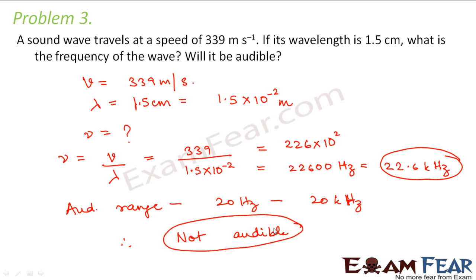I hope that now you understand what is sound, how is sound produced, how does sound propagate in a medium, and the different characteristics of a sound wave like wavelength, frequency, time period, and speed. You also know some applications of sound like ultrasound in medical purposes and industries, and the basic structure and functioning of the human ear. Please try to solve more problems to get familiar with the concepts of the lesson. See you all in the next lesson. Thank you.